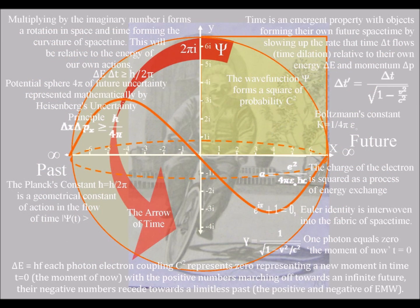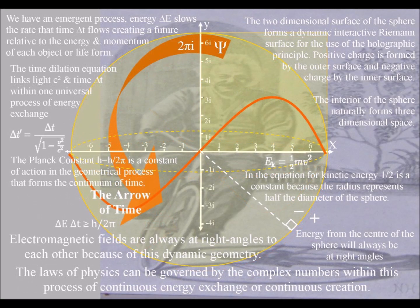This is explained here using the complex plane diagram and a pencil drawing of Einstein. In the drawing, Einstein is forming his own future, relative to the energy and momentum of his actions.